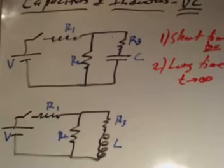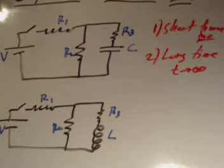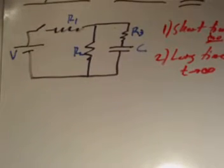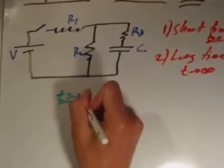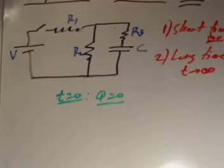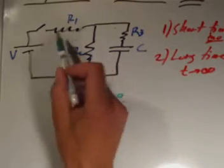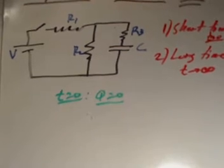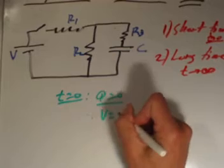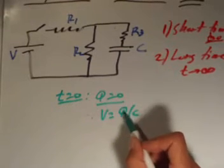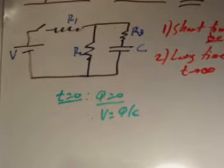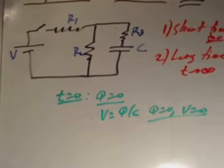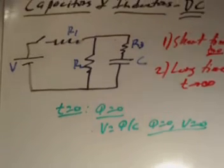Let's get right into it. We'll talk about the capacitor circuit first — what happens right after the switch is closed. Initially, at T equals zero, the capacitor is completely uncharged. There's no charge on it because it's brand new out of the box and never been connected to a battery. Remember that V equals Q over C. So if there's no charge on the capacitor — Q is zero — there'll be no voltage drop across it either.